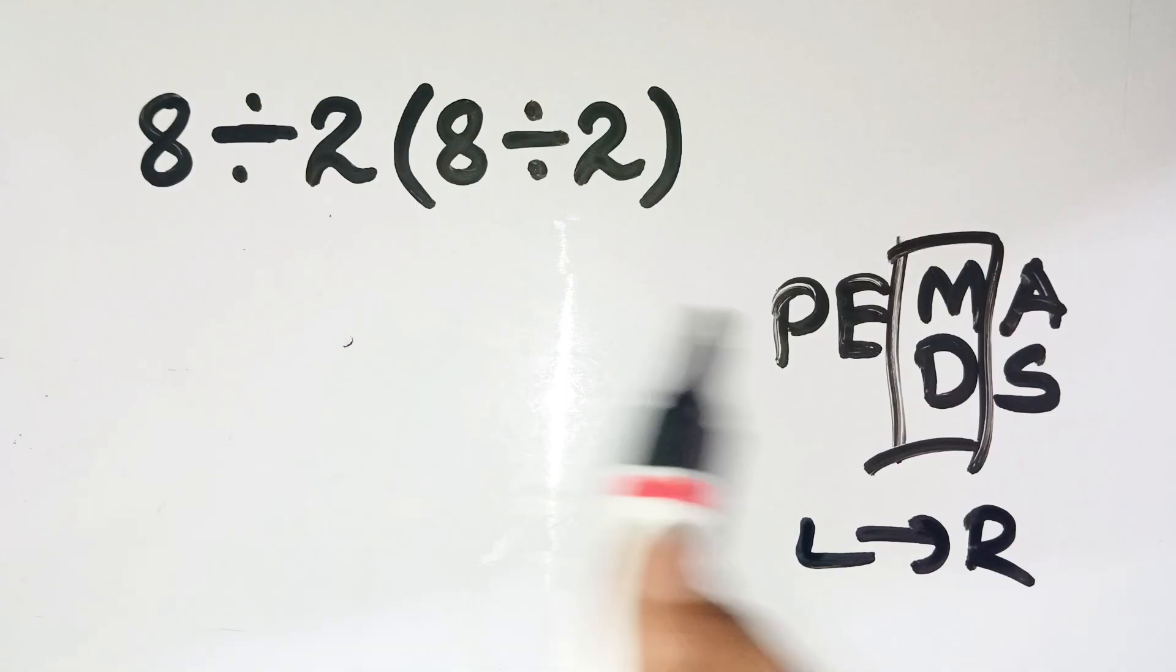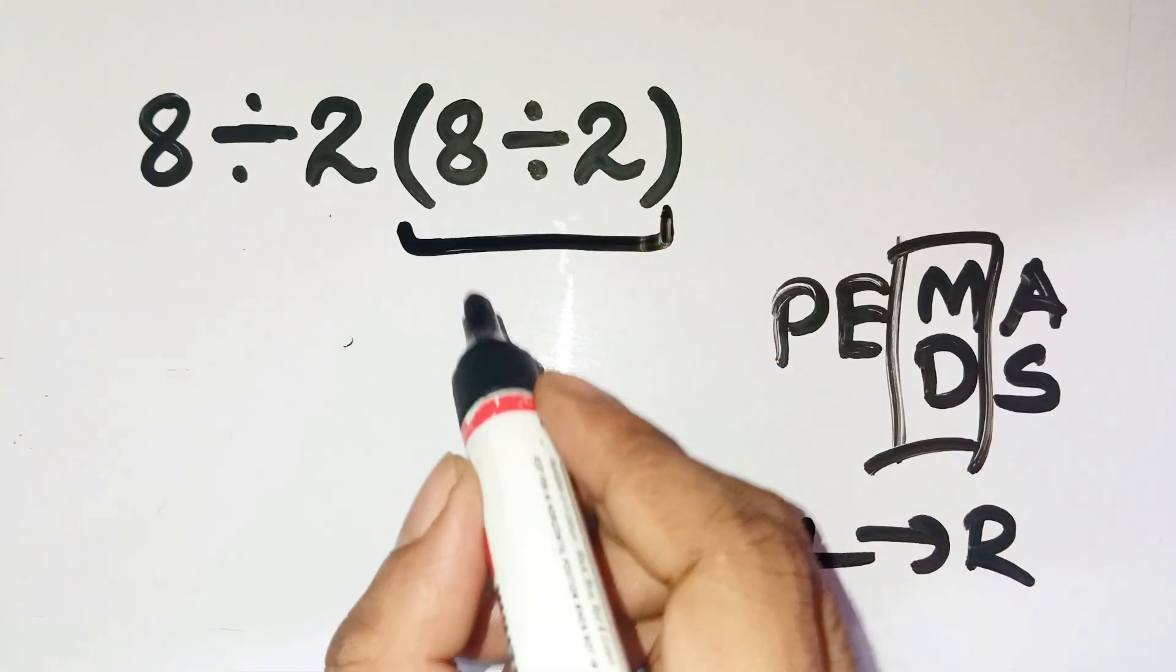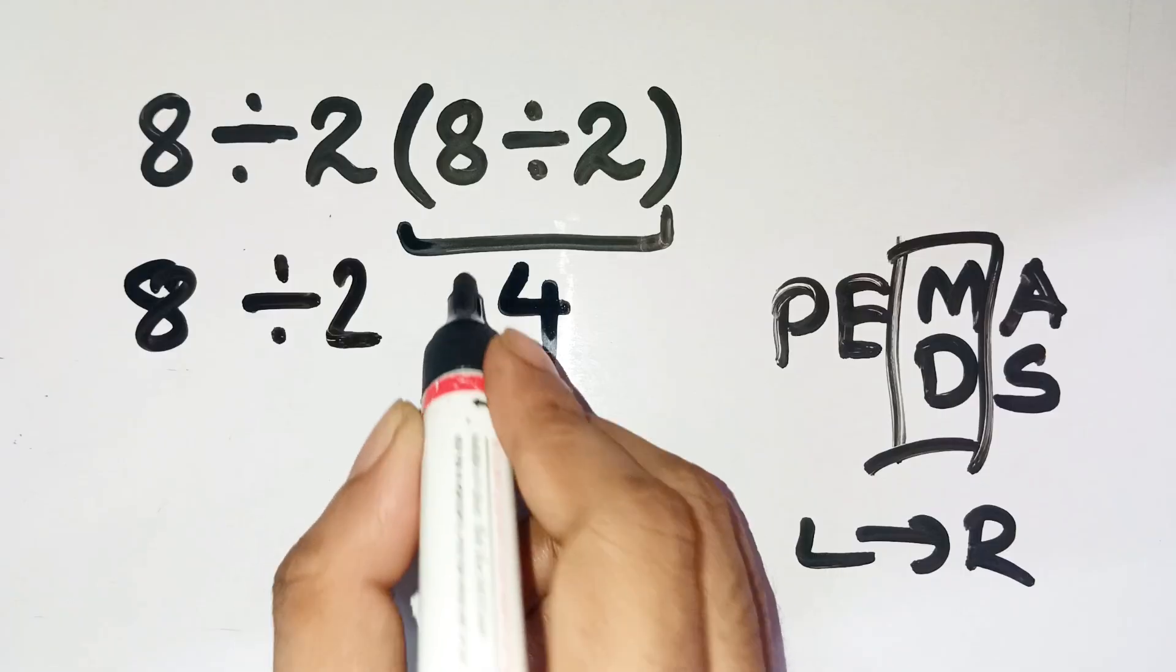Step 1, handle what's inside the parentheses first. Inside, we have 8 divided by 2, which is 4. So now the expression becomes 8 divided by 2, parentheses 4.